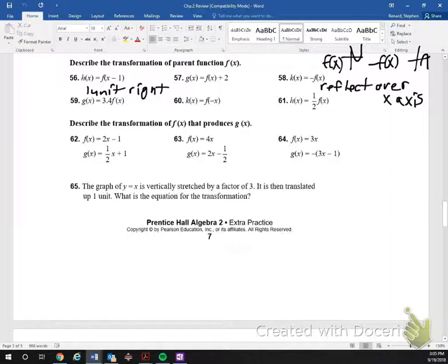If you look at number 60, and if this was still my parent function over here, 60 would look something like this. It would flip it over the y-axis. So it would look like that.